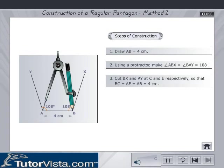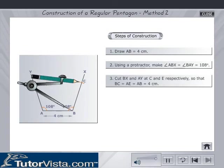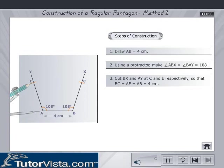Cut BX and AY at C and E, respectively, so that BC is equal to AE is equal to AB is equal to 4 cm.